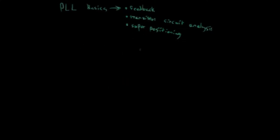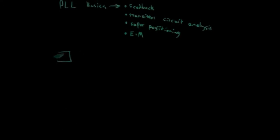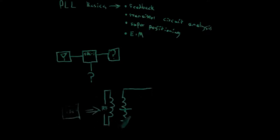A phase-lock loop utilizes the main concepts of electrical engineering, that is, feedback, transistor circuit analysis, circuit superpositioning, and electromagnetics. When these four concepts combine, they can work together into forming a working product.